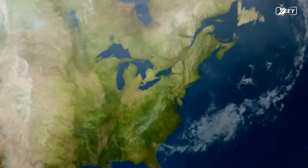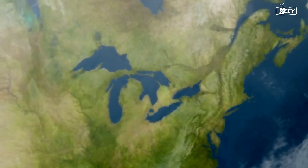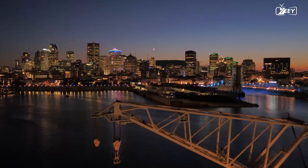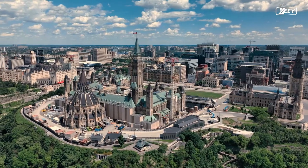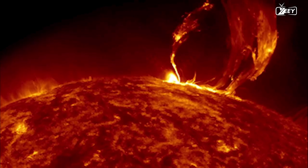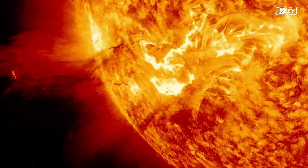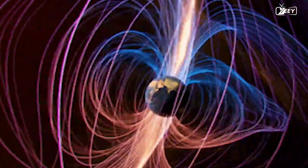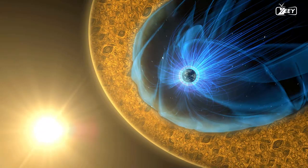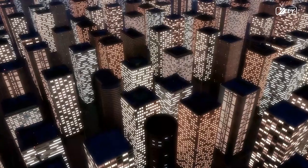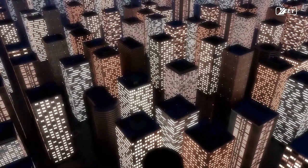Because of the storm's strength, electrical grids in Canada and the Northeastern United States were knocked down. New York City, Boston, Montreal, Toronto, and Ottawa were among the cities affected. The storm was created by a coronal mass ejection, a massive cloud of highly charged particles emitted by the sun. These particles, which may move at speeds of up to 6,000 kilometers per second, can interfere with the Earth's magnetic field, causing electrical networks to fail. This is exactly what happened in 1989, causing power disruptions throughout hundreds of thousands of square kilometers.